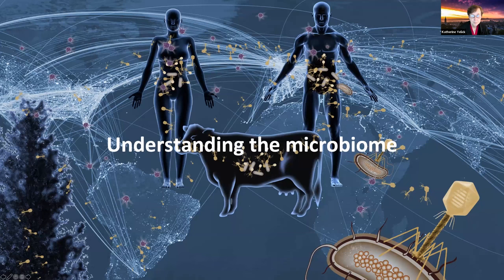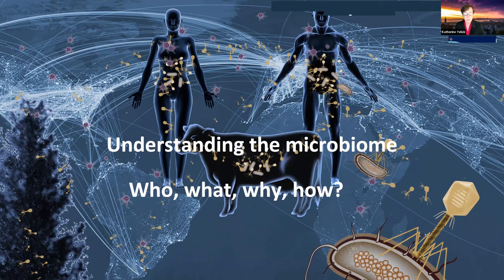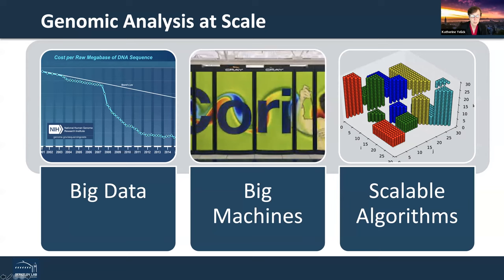In doing genomic analysis at scale, as with many other scientific problems, there's a combination of very large datasets. There's a picture of a standard graph showing the cost per human genome to sequence. We're not talking about human genomes but microbial genomes; nevertheless, this is a good metric for the exponential improvement in data collection cost. There's also a picture of the supercomputer Cori at NERSC, where a lot of this work was done, and highly scalable parallel algorithms are needed.